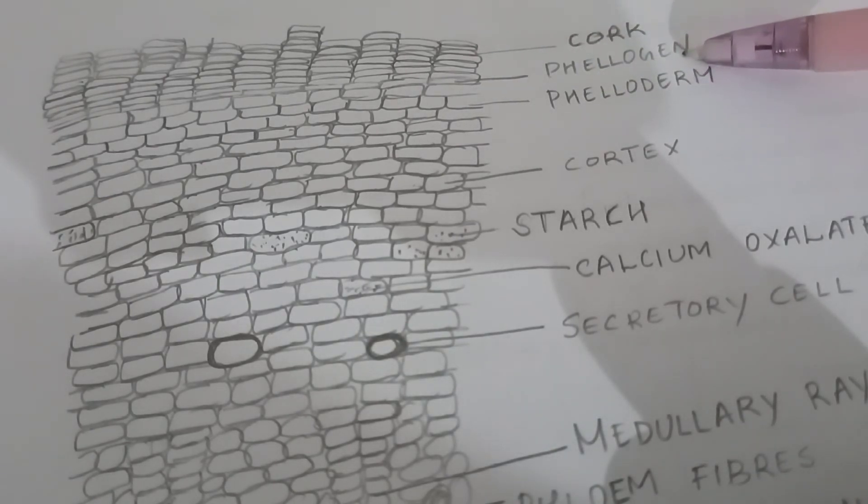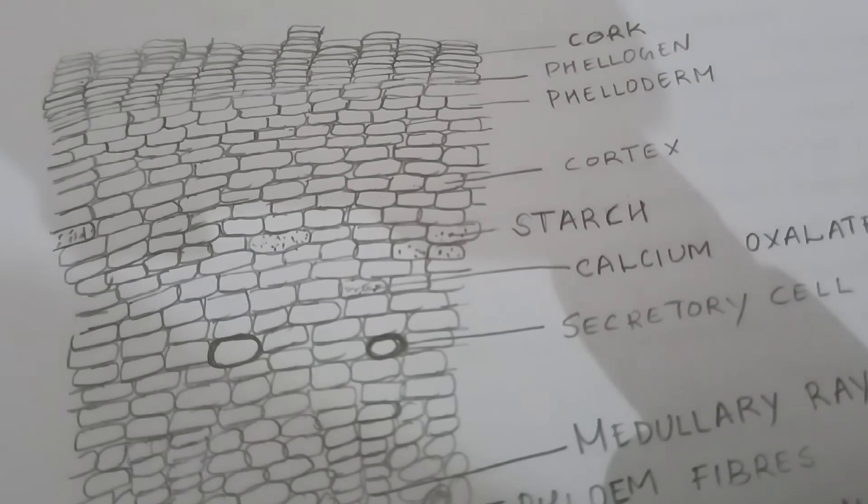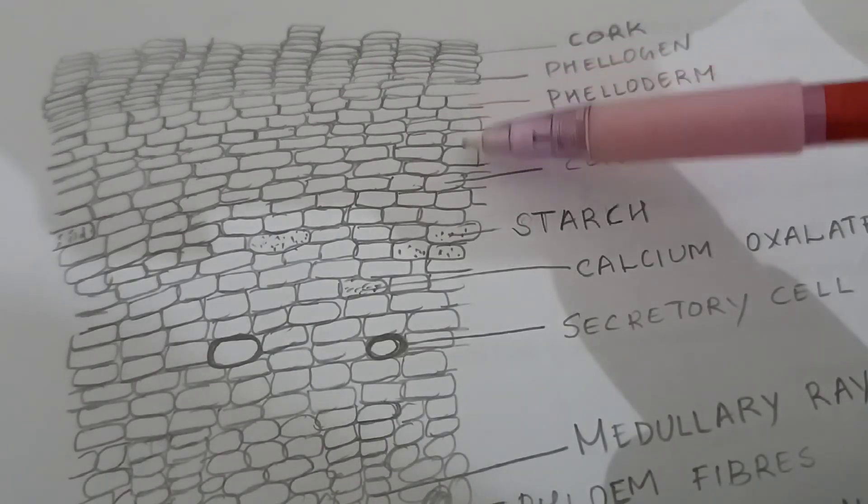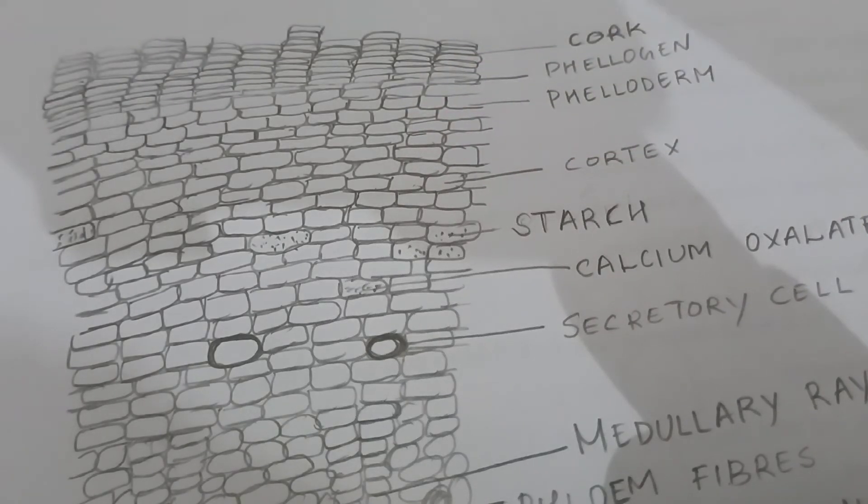Below that there are 6-8 layers of thin-walled rectangular cells without any cellular content. They are like cork, arranged at times in radial rows. These cork, phelogen, and pheloderm are all part of periderm.